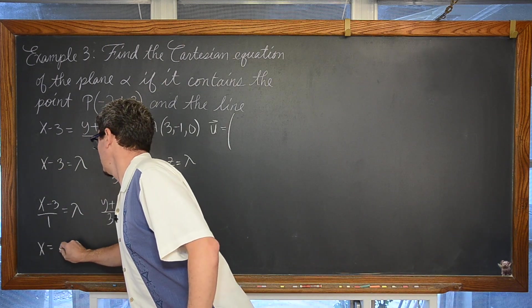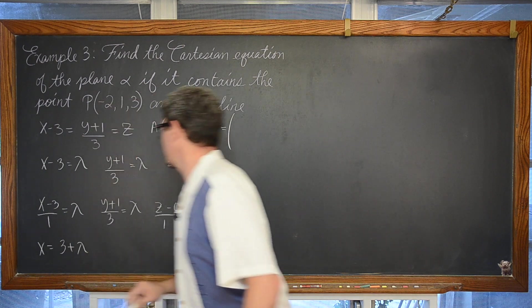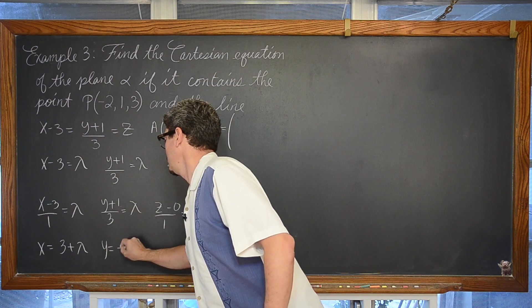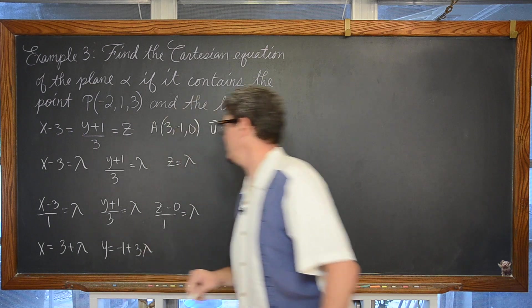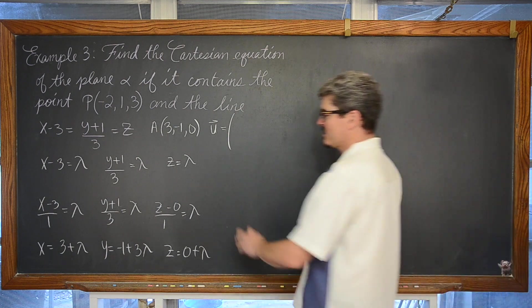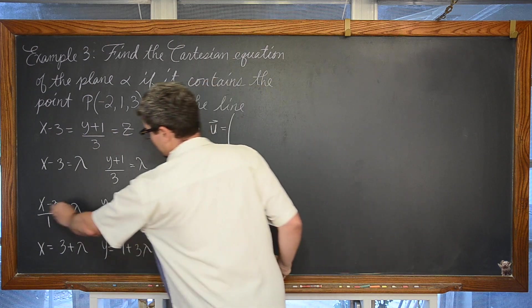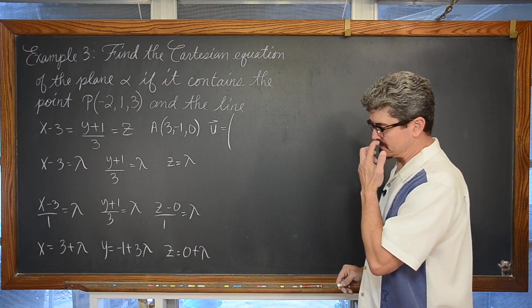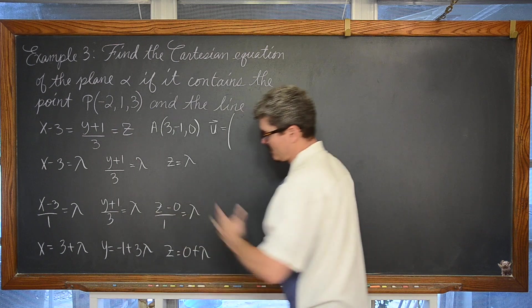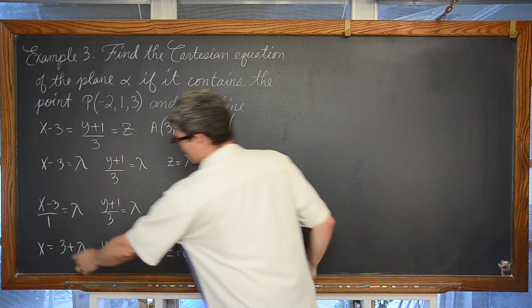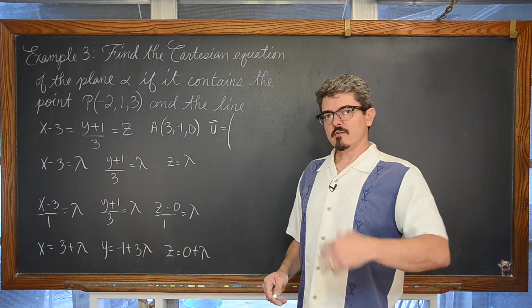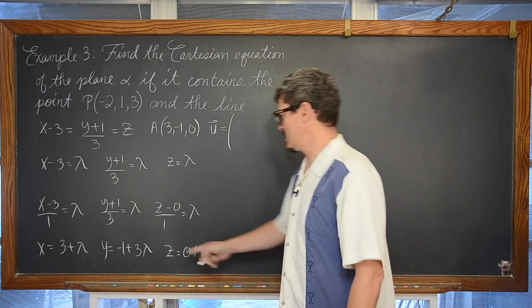x is equal to 3 plus lambda. Coming down here, multiplying by 3 and subtracting 1, we have y equals negative 1 plus 3 lambda. And we have z equals 0 plus lambda. So however you look at it, whether moving into our parametric equations or just solving each for x, y, and z, which honestly is better now that I'm saying this. We can see that point again of 3, negative 1, 0 here. And lambda is that scalar multiple of our gradient or directional vector, which is going to be 1, 3, and 1.